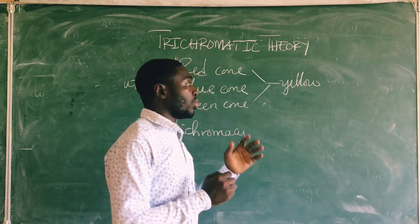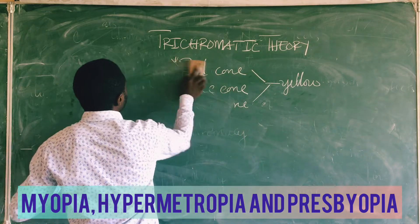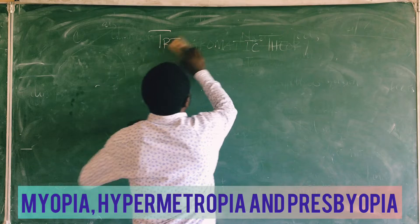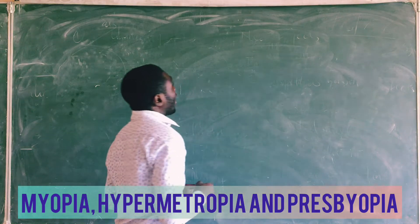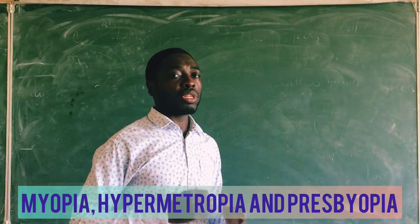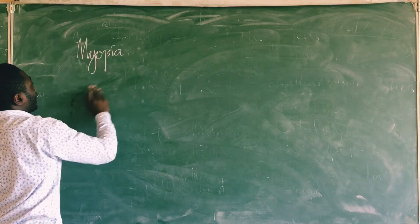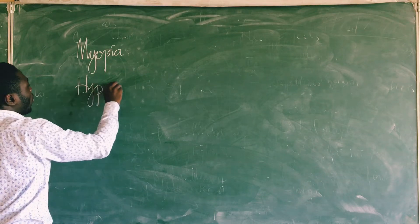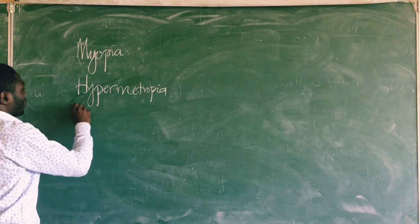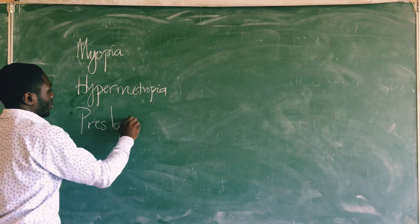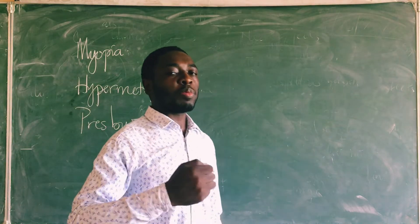If asked that question, that is the way you are going to approach it. Now I will continue by telling us the different types of abnormalities. We are going to talk about the types of abnormalities that we can have. We can have myopia, which is also called short-sightedness. We can have hyper-myopia, which is also called long-sightedness. And we can have what we call presbyopia, which is an abnormality of accommodation in people that are aging.